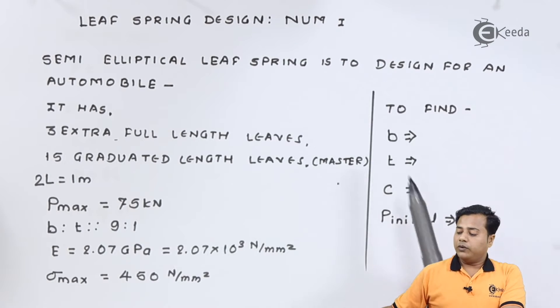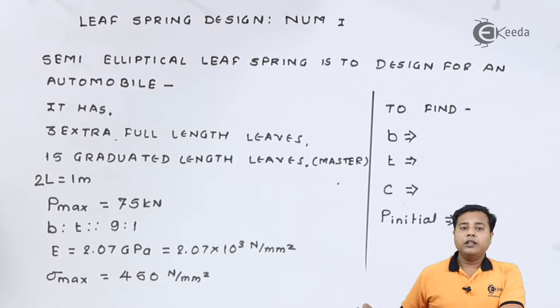Further, we need to find out the width, the thickness, the factor C, and the P_initial so as to bring the nipping to zero or to bring the given leaf spring to equilibrium. That is nothing but the equilibrium of its own structure.